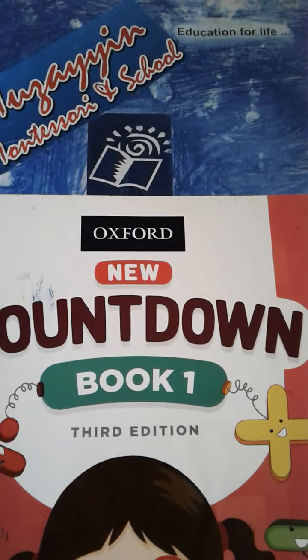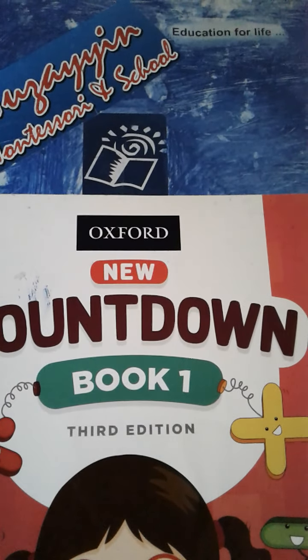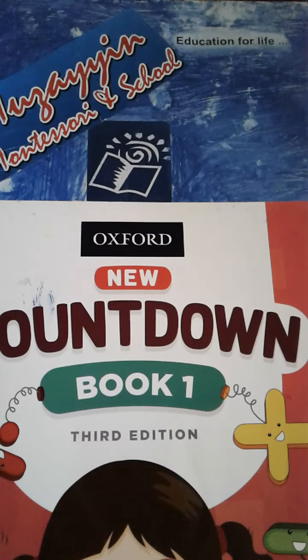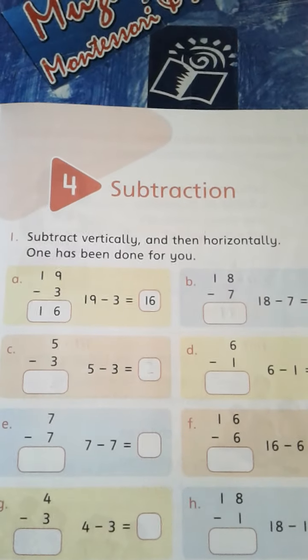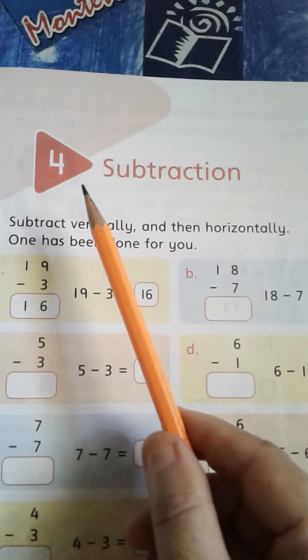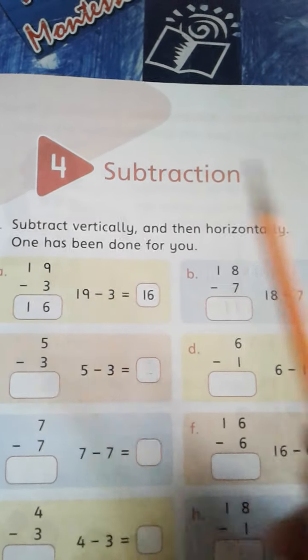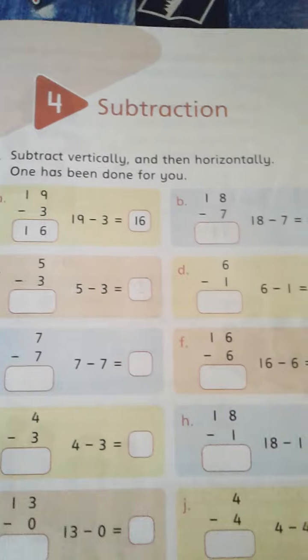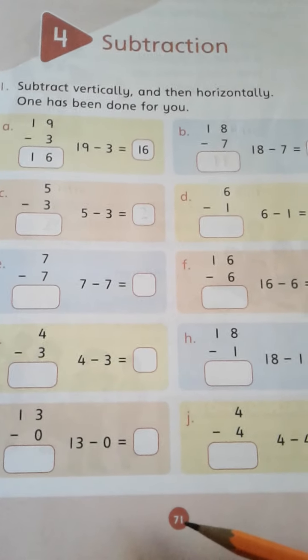Assalamu alaikum and welcome to Musaian Montessori and Schools Countdown online class for grade 1. Students, in today's online class we are starting our new chapter, chapter number 4, subtraction, and we will solve page number 71.